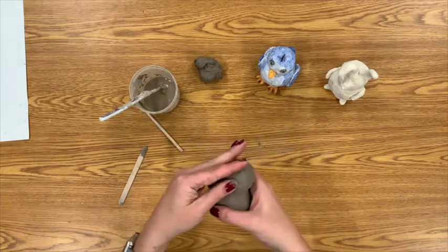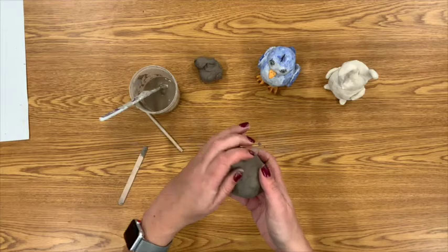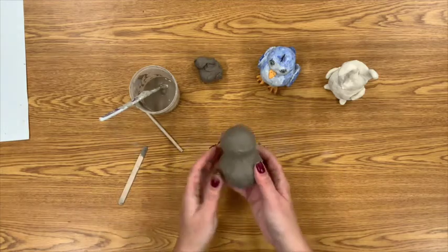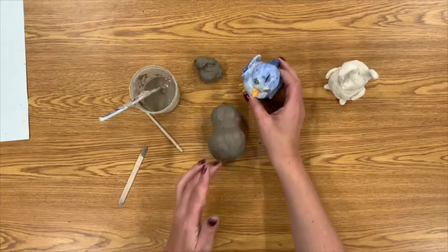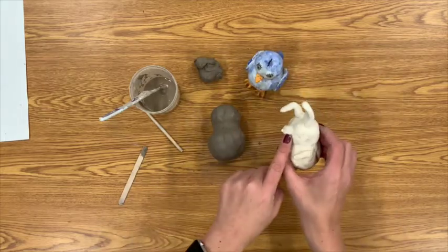Now I have a head and a body, and it's time to turn it into a creature. If I add a beak and wings, it becomes a bird. If I add some long floppy ears, it's a rabbit or maybe a dog. It's really up to you.